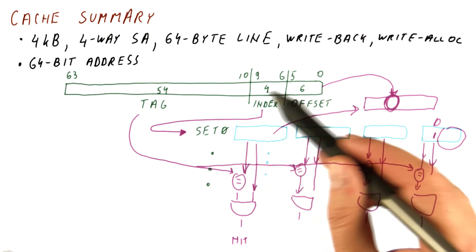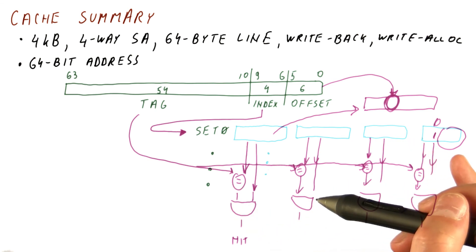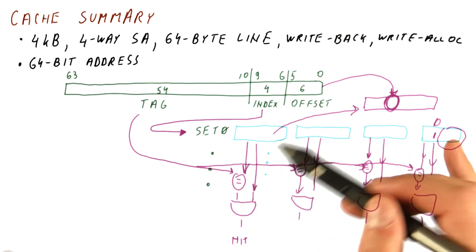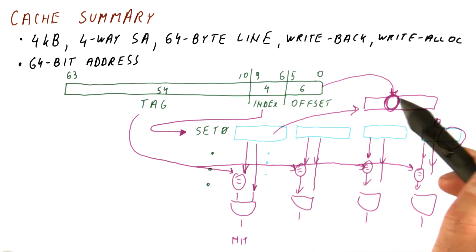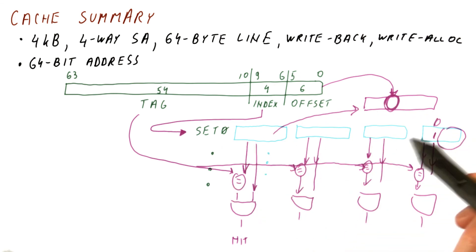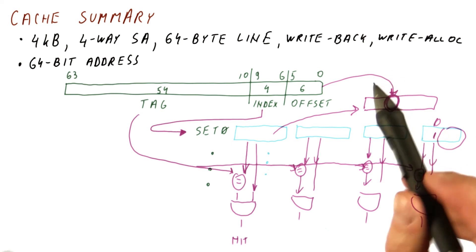So as you can see, all of the stuff that we have been talking about in the cache really happens kind of simultaneously. On every access, all of this needs to happen. If it's a hit, up to here. If it's a miss, all the way to writing back to memory, fetching another block from memory and updating the tag and valid bits.